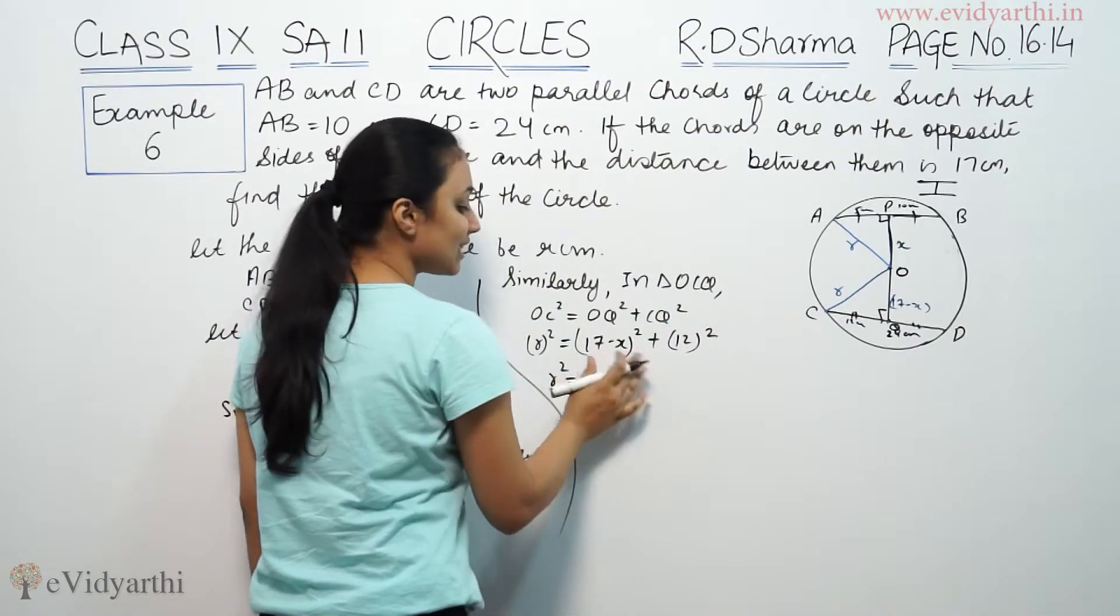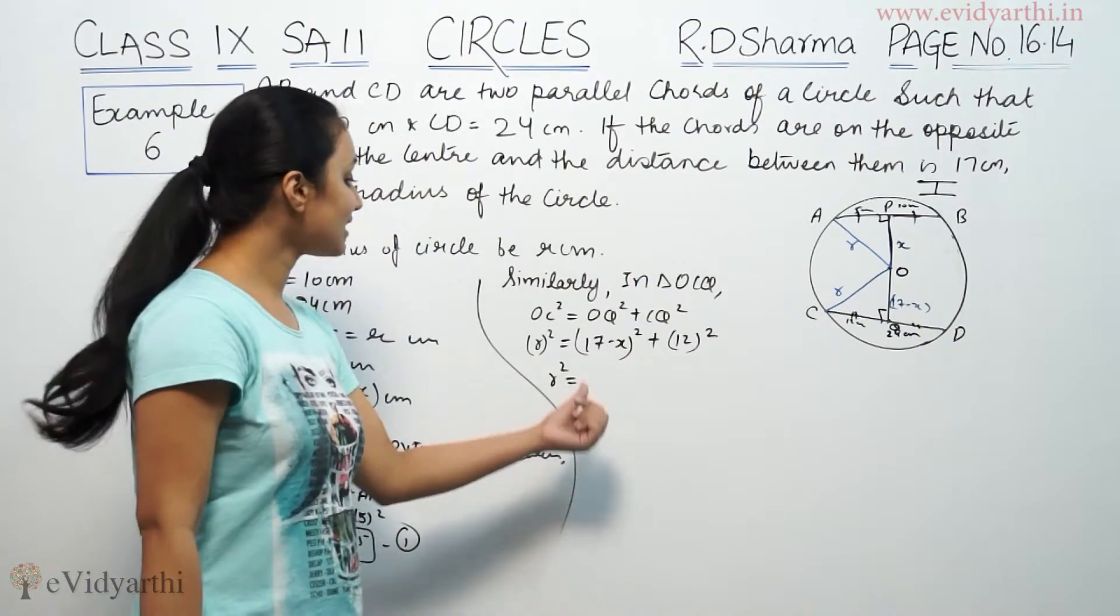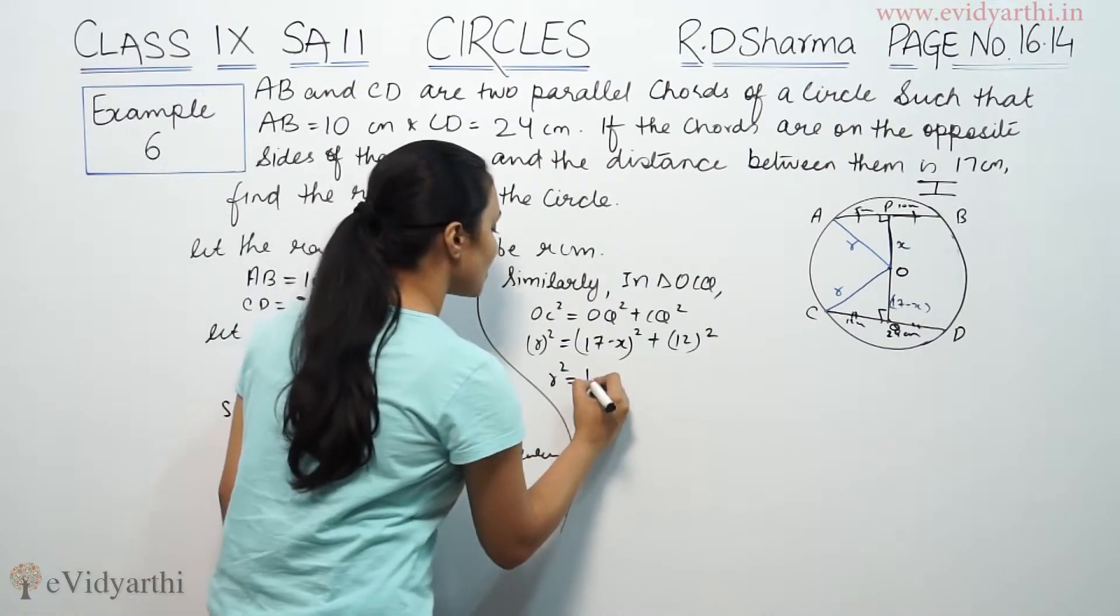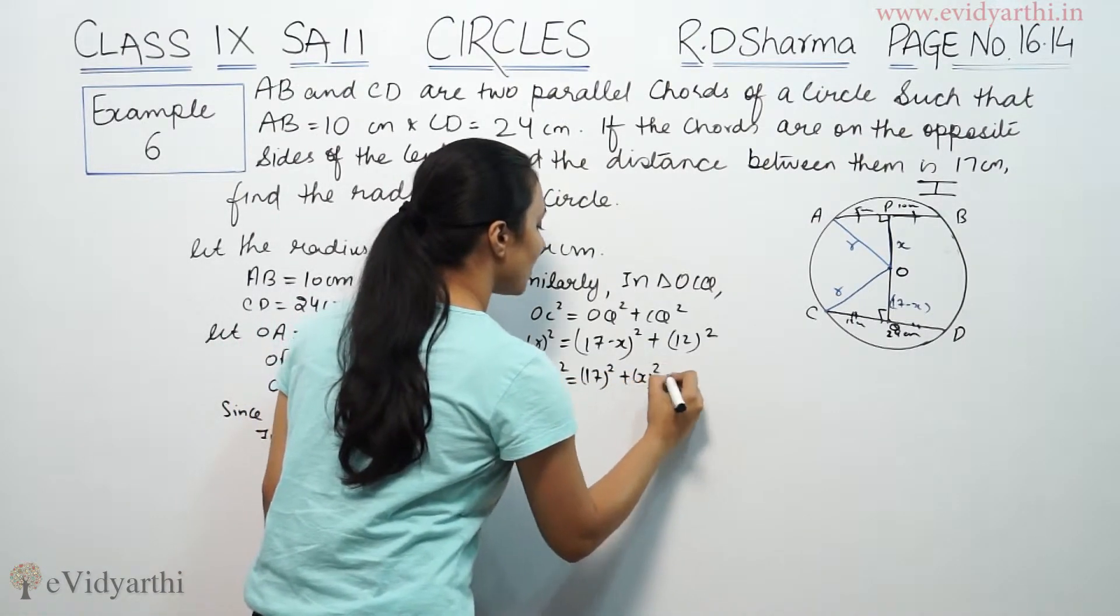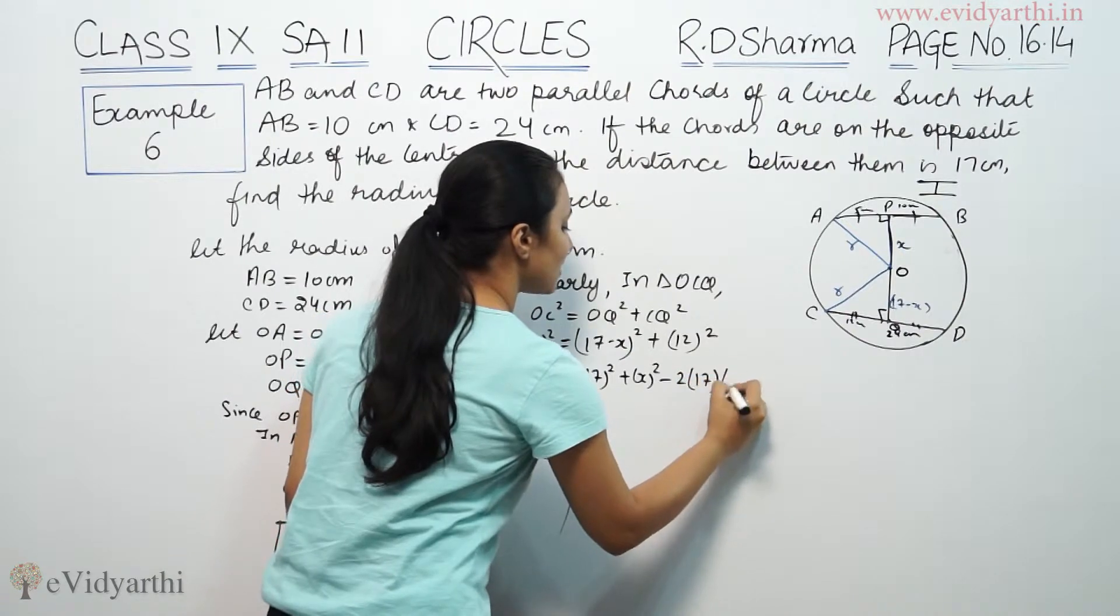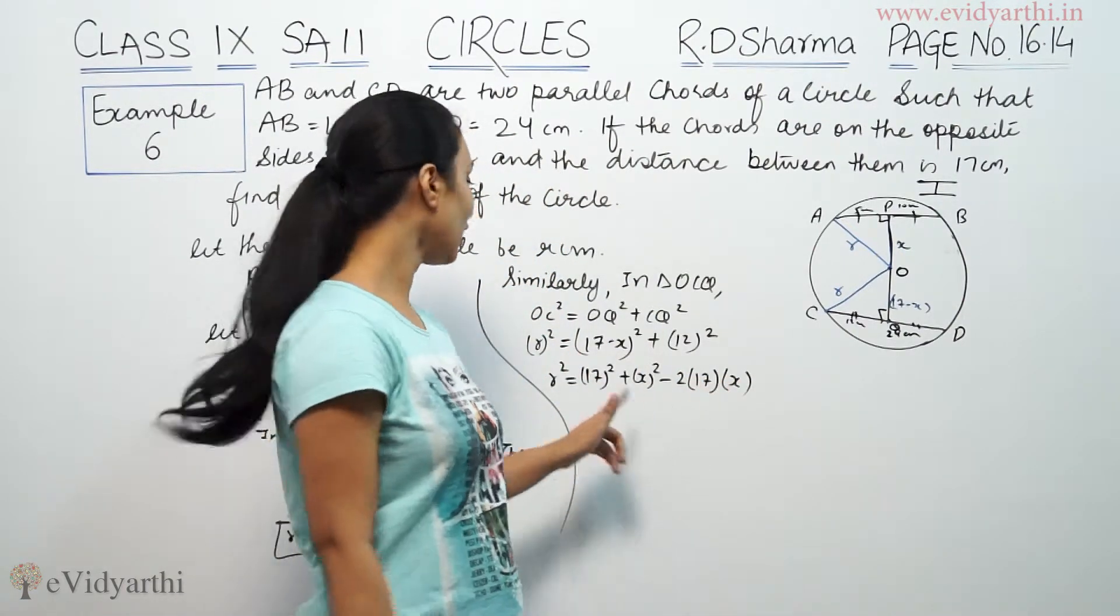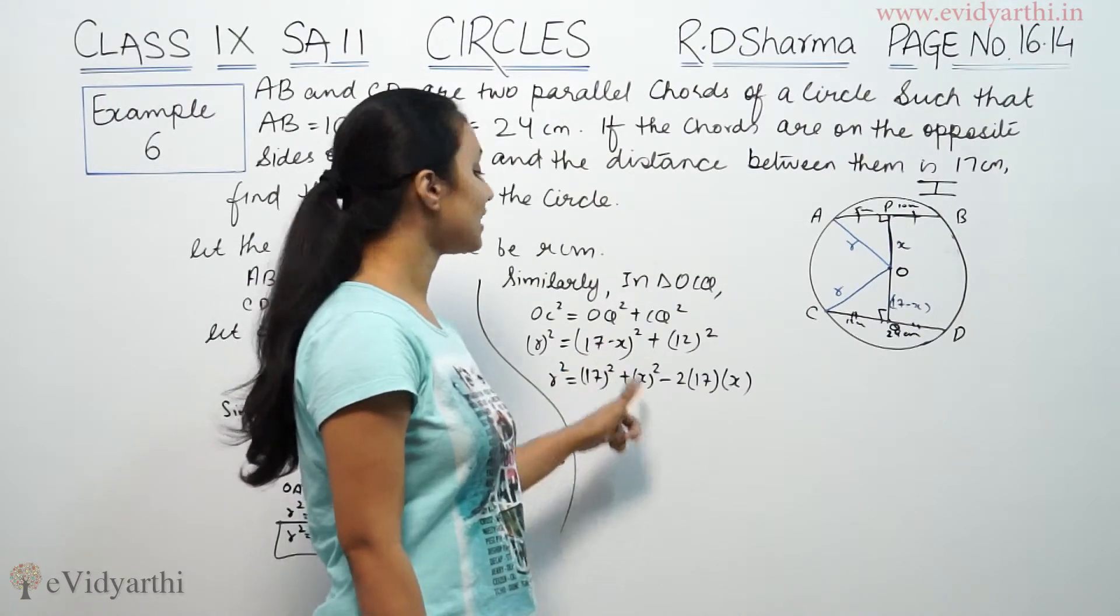So r square equals—now we are going to solve this. This is a minus b, so a minus b whole square. So this will be 17 square plus x square minus 2ab, 2 into 17 into x. Many times when students apply whole square formula, you cannot directly solve. When it is in a minus b or a plus b form, you have to put the identity.